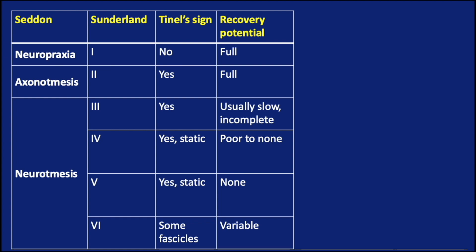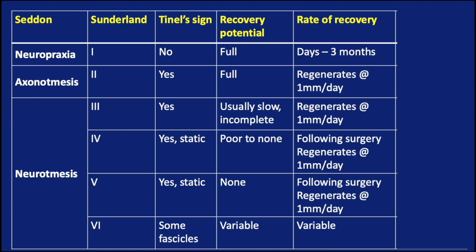Recovery potential is full for neuropraxia and axonotmesis. It is usually slow or incomplete in Sunderland type 3, poor or none in types 4 and 5, and variable in type 6. The rate of recovery is a few days to three months in neuropraxia. In axonotmesis, regeneration occurs at 1 mm per day. In all other types, following surgical repair, regeneration also proceeds at 1 mm per day.